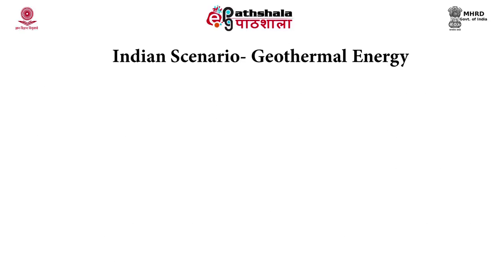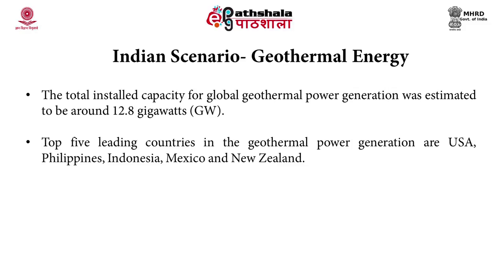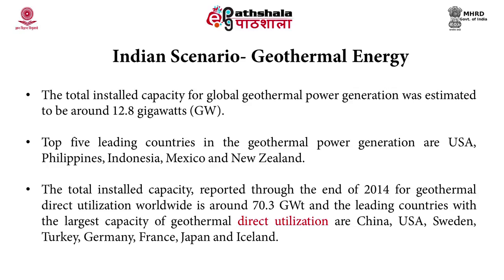Looking at the global scenario, the total installed capacity for global geothermal power generation was estimated to be around 12.8 gigawatts. The top five leading countries in power generation are USA, Philippines, Indonesia, Mexico, and New Zealand. The total installed capacity for direct utilization over the world is around 70.3 gigawatts, with the leading countries being China, USA, Sweden, Turkey, Germany, France, Japan, and Iceland.